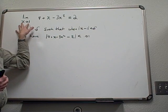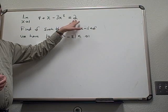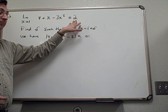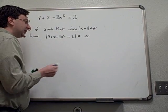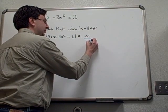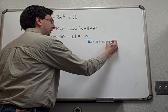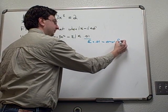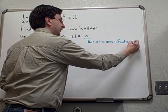We know that the limit as x approaches 1 of this function 4 plus x minus 3x squared is equal to 2, that's easy to verify. What we're looking for in this problem is we're allowing it to have a certain error. So this epsilon value being 0.01, we call that our error for the function values.